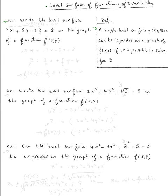A level surface g of x, y, z equal to c — where c equals eight in this example — can be regarded as the graph of a function f of x, y if it is possible to solve for z. So all we have to do is solve for z.